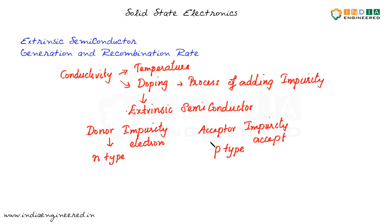Donors are those impurities which can donate an electron to the crystal, and acceptors can accept an electron and thereby create a hole. In intrinsic semiconductors, the carrier concentration or electron-hole pair concentration is controlled by temperature — thermally generated electron-hole pairs. In addition to that, we can dope, meaning deliberately add a controlled amount of impurity to the system.